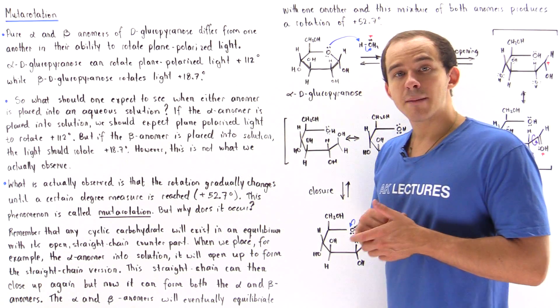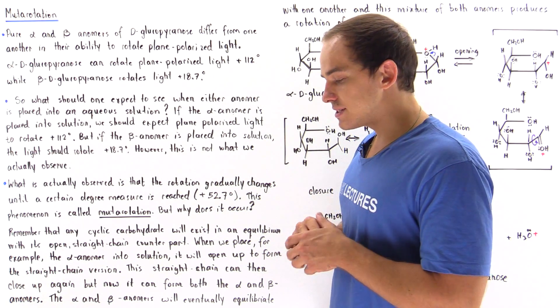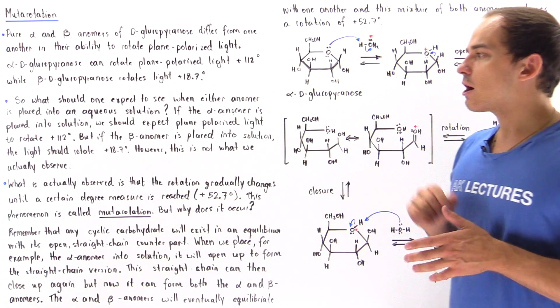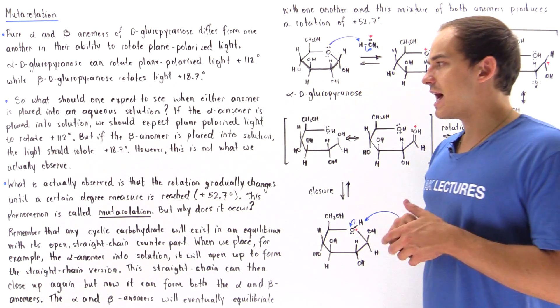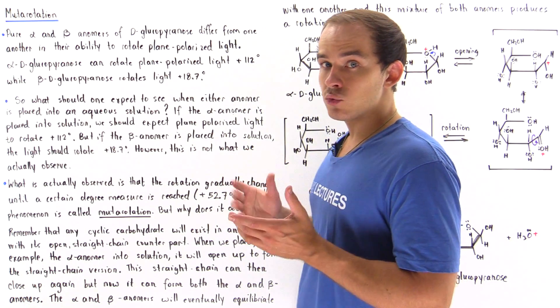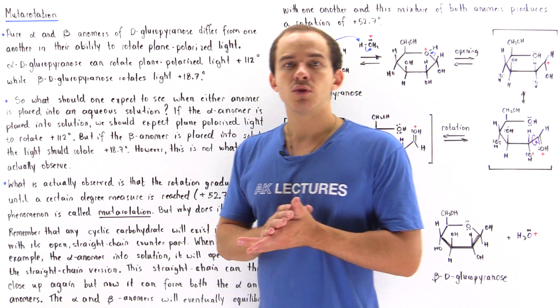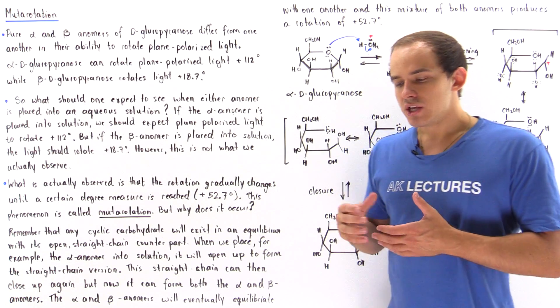What exactly will happen to our light? The same question can be asked for our beta anomer — if the beta anomer is placed into our aqueous solution, how exactly will it rotate plane polarized light?